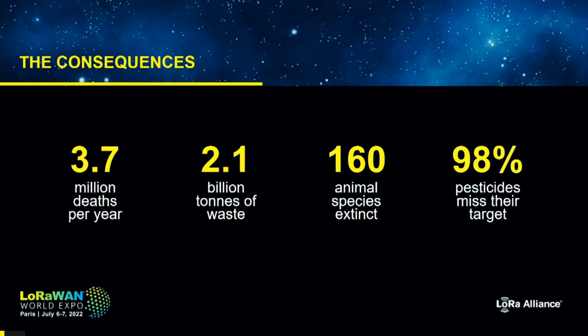And the last number — when I found it, it shocked me because it's incredible. 98% of herbicides and insecticides actually hit the wrong target, so they end up killing different plants and different insects than intended, including insects that are important for pollination. And of course, they pollute the air, water, soil, and also the food we eat.